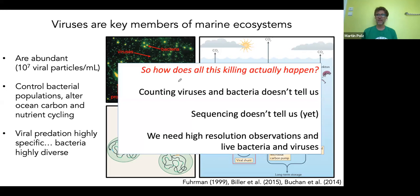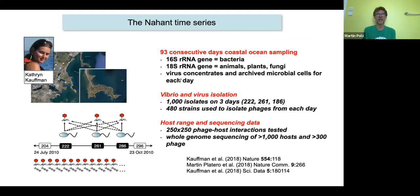Bacterial populations and communities are extremely diverse, so the supposed killing — how can all this killing really happen? Counting viruses and bacteria doesn't tell us, and unfortunately metagenomics doesn't yet either, because it's very difficult to really link hosts with their specific viruses and infer lysis from that. What we reasoned was that we need high-resolution observation of live bacteria and viruses in the environment.